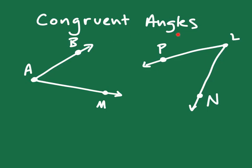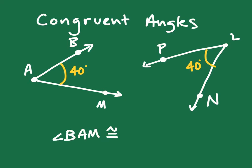The next thing we can talk about are congruent angles. Let's say that I have two different angles: angle BAM and angle PLN. Both of these angles measure 40 degrees. Because both angles have the same measure of 40 degrees, we can say that angle BAM is congruent to angle PLN. We can also use arc marks to show this — if two angles each have an arc mark, those two angles are congruent.